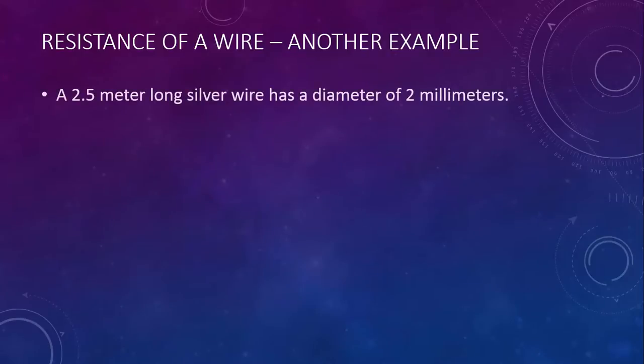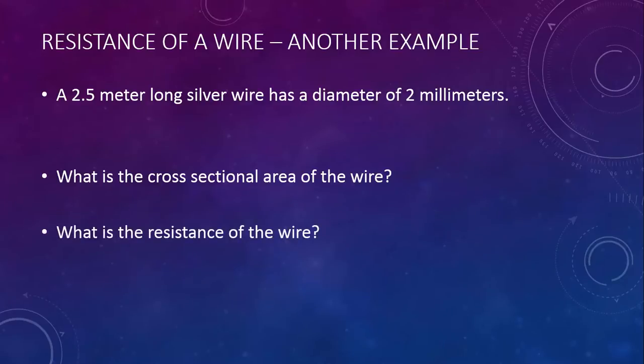Here's another example. A 2.5 meter long silver wire has a diameter of 2 millimeters. What is the cross-sectional area of the wire? What is the resistance of the wire?